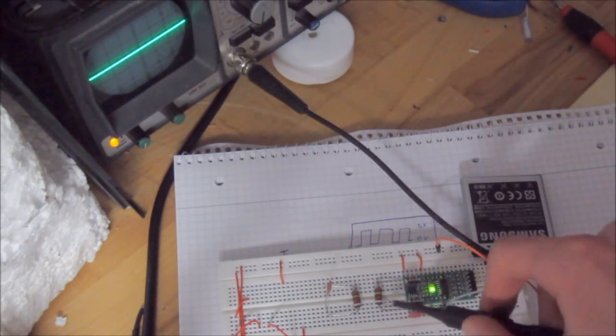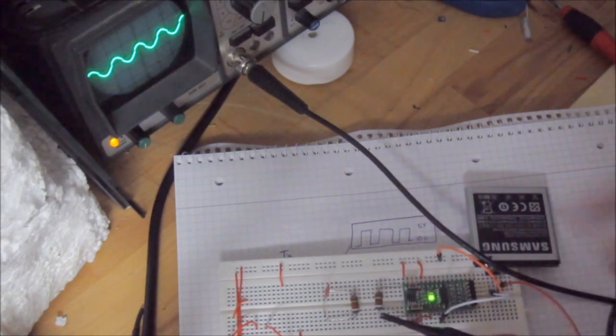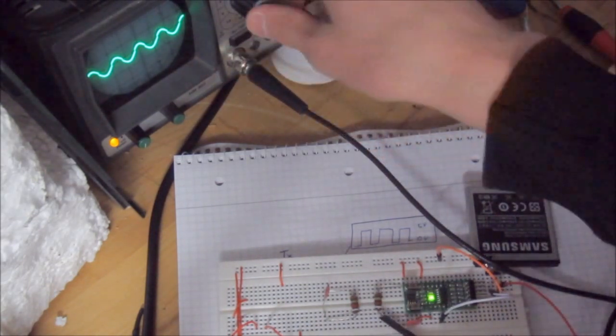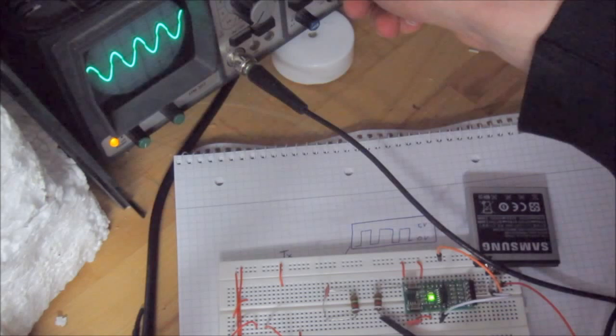So let me just connect the oscilloscope. And here you can see the sine wave that is generated in the inductor by the PWM signal.